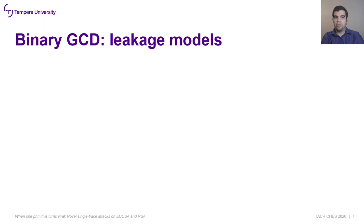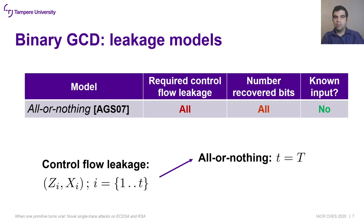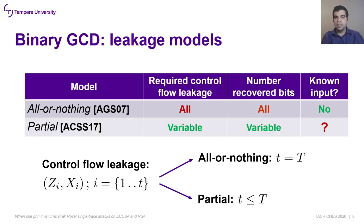Several leakage models have been proposed to relate control flow information with algorithm inputs. In 2007, the all-or-nothing model was proposed, which requires knowledge of the entire control flow — the result of all conditional operations — to recover all input bits. This model does not require that one of the algorithm inputs be known in advance. Ten years later, the partial leakage model was proposed, offering more flexibility: an adversary can recover some information on the inputs using only partial control flow information.